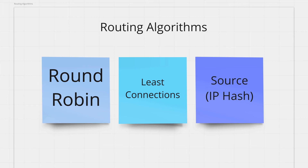Let's say you have three servers A, B, and C. The load balancer will send the first request to A, second to B, third to C, and fourth again to A. Another popular algorithm is called least connections. The load balancer forwards the request to the backend server that has the least number of active connections. Active connection means the number of requests the server is already serving right now. This makes sure that the most free server responds to the latest user request.